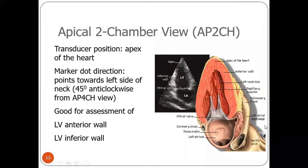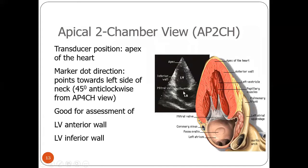In the apical two-chamber view, the transducer is rotated toward the right side to show two chambers: left atrium and left ventricle. The valve facing anteriorly is the anterior leaflet and the posterior is the inferoposterior leaflet. This view is important for differentiating anterior wall MI from inferior wall MI: if anterior wall MI, the anterior wall moves less; if inferior wall MI, the inferior wall moves less. It also helps assess mitral valve disease such as mitral regurgitation.